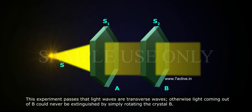This experiment proves that light waves are transverse waves. Otherwise, light coming out of B could never be extinguished by simply rotating the crystal B.